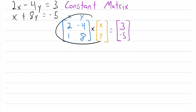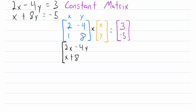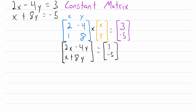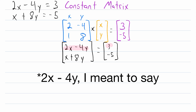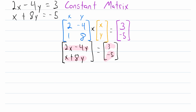If we computed this matrix multiplication, the result would show 2x minus 4y in the first row, and x plus 8y in the second row — that would be our matrix on the left — and then on the right we still have our constant matrix. This is clearly equivalent to the system of equations; they both have the same solution. Whatever x and y values make these two equations true will also make this one matrix equation true, because this matrix can only equal the other if 2x minus 4y equals 3 and x plus 8y equals negative 5.